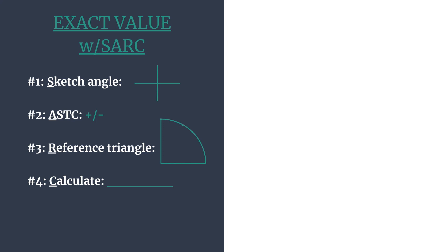so we'll find a reference angle, and then a special right triangle and coordinates to go with it. And then C will calculate our trig ratio.